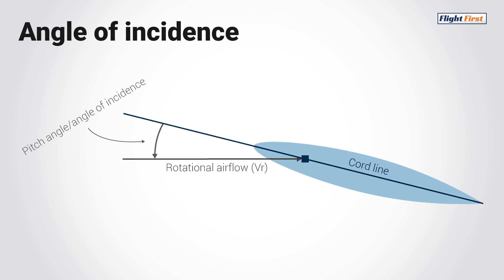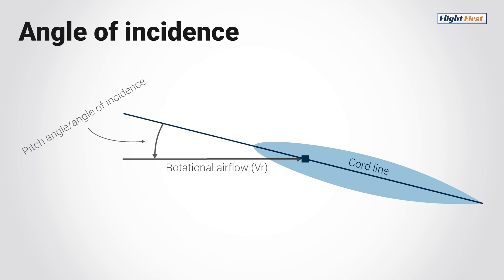A change in angle of incidence does not necessarily imply a change in angle of attack, and vice versa. Remember, the angle of attack is the result of the current resultant relative wind, which can be changed by the winds, nearby obstacles, and the pilot's control inputs.